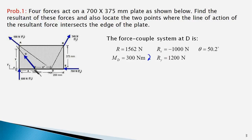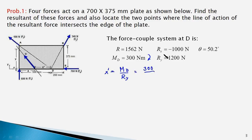Since the moment of this force about point D equals MD, we have x prime equal to MD divided by Ry. This is equal to 300 Newton meter divided by Ry which is 1200 Newton, giving x prime equal to 0.25 meter, or 250 mm.